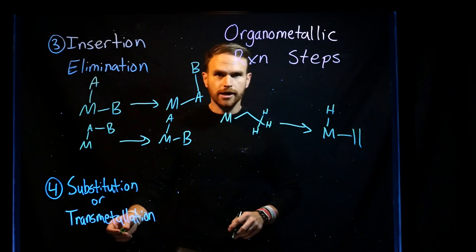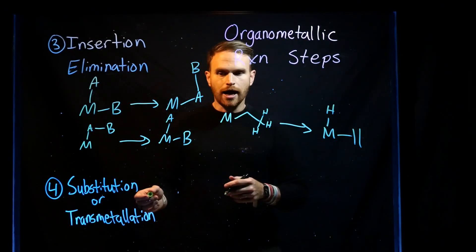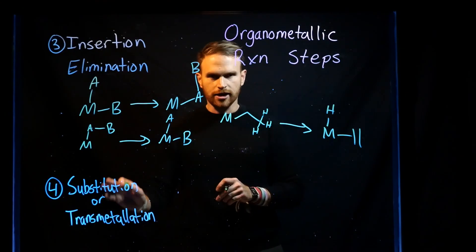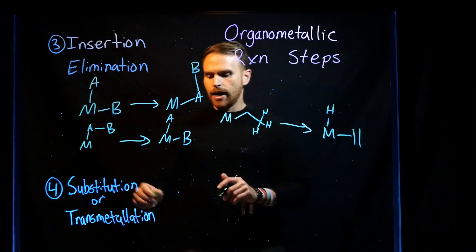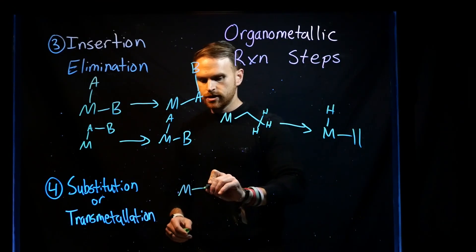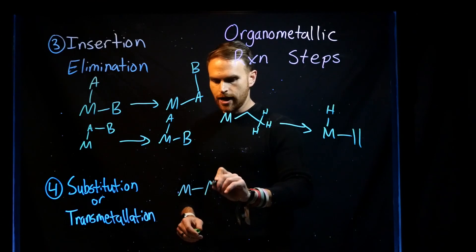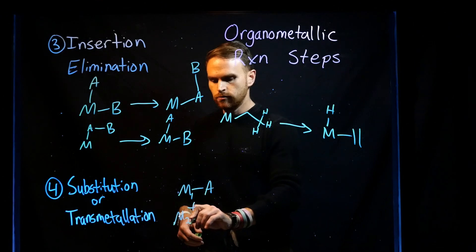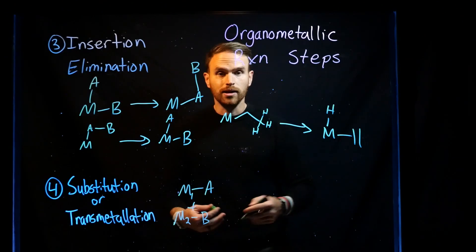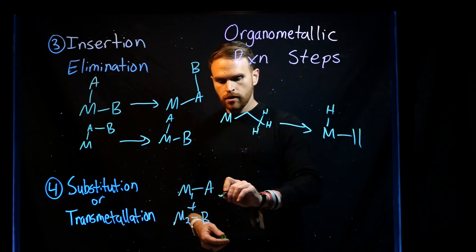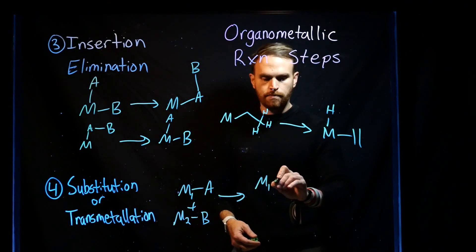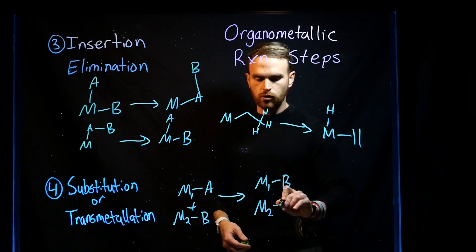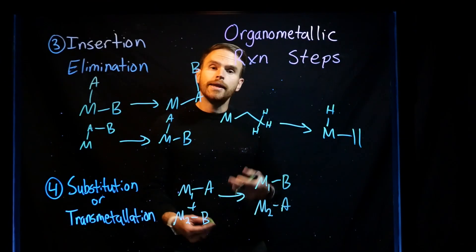Substitution and transmetallation is the final class. These terms are often used interchangeably, though they are not actually reverses of one another. We can think of this as having two different types of metals in your reaction system — M1 and M2 — that do a ligand exchange. Metal 1 becomes attached to ligand B, and metal 2 becomes attached to ligand A.